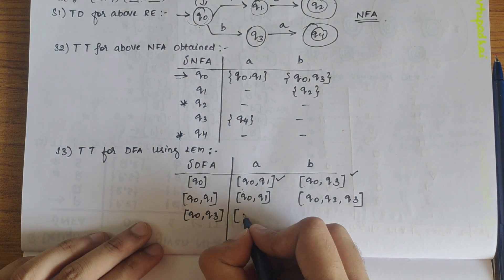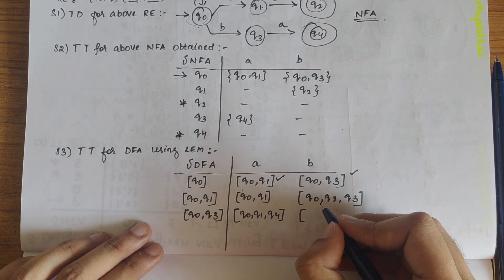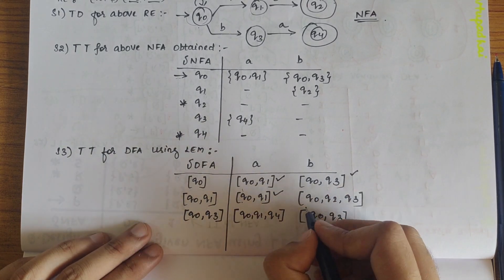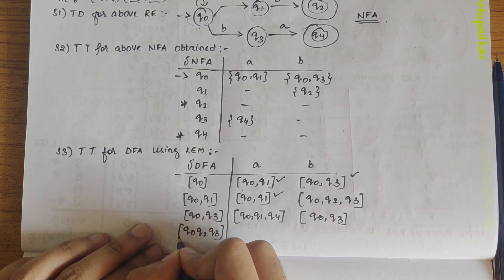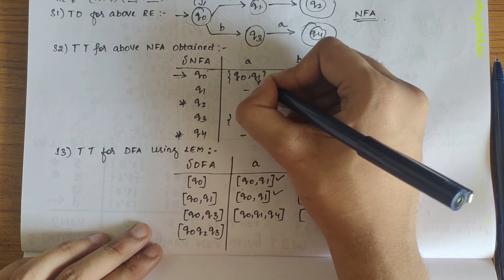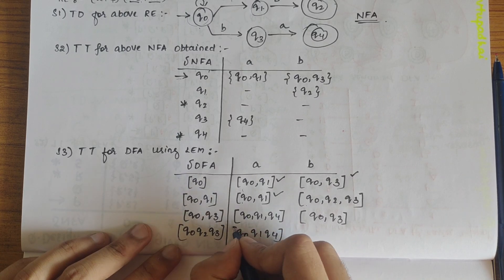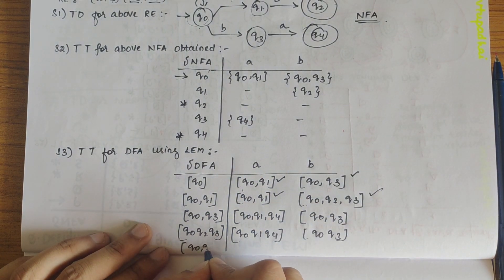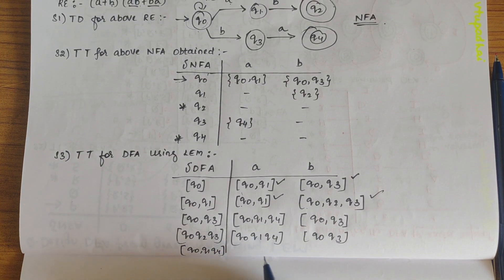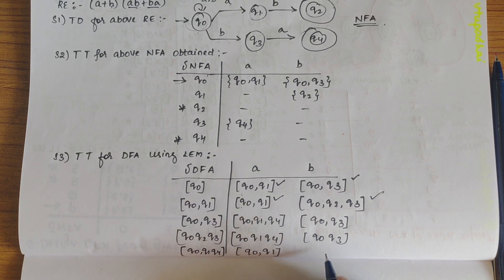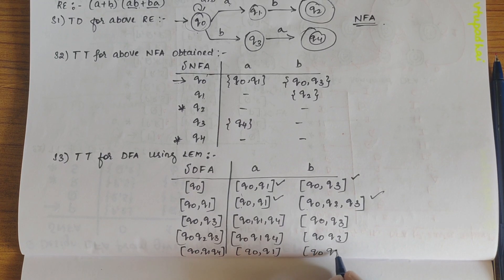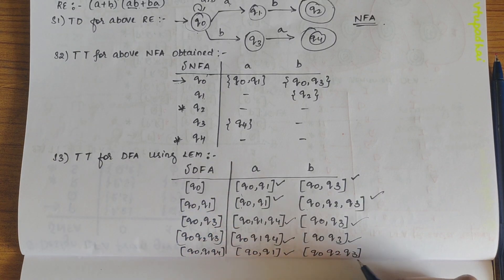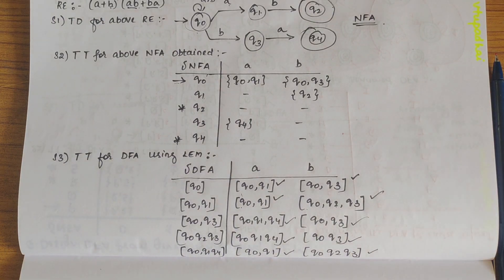{Q0, Q3} on A gives {Q0, Q1, Q4} and on B gives {Q0, Q3}. So {Q0, Q3} is defined. {Q0, Q1} is already defined. Now for {Q0, Q2, Q3}: on A gives {Q0, Q1, Q4} and on B gives {Q0, Q3}. Then {Q0, Q1, Q4} on A gives {Q0, Q1} and on B gives {Q0, Q2, Q3}. All states — {Q0, Q1, Q4}, {Q0, Q3}, {Q0, Q1}, and {Q0, Q2, Q3} — are now defined.